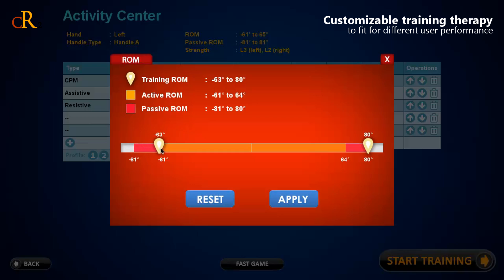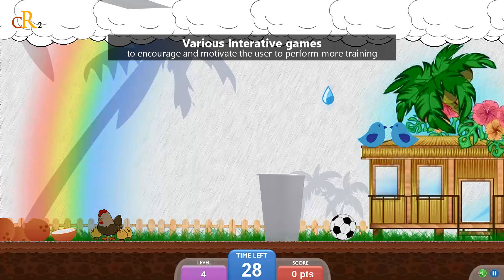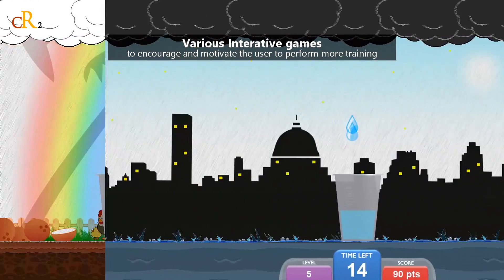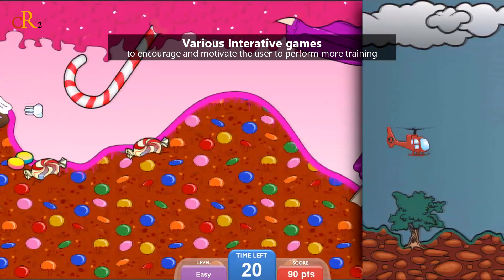It also provides customizable training therapy to fit for different user performance. The robot encourages and motivates the user to perform more training by providing various engaging virtual reality games for them to play while training their hand.